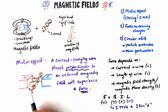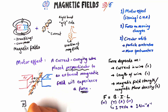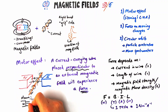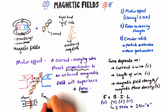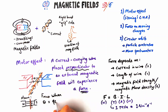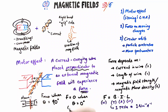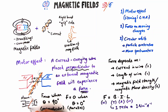One thing to note is the orientation of the wire relative to the magnetic field. The maximum force occurs when the angle between the field lines and the wire is 90 degrees. There will be zero force if they are parallel. Anywhere between zero and 90 degrees there will be some force, and you will need to use trigonometry — sine or cosine — to find the component perpendicular to the field lines.